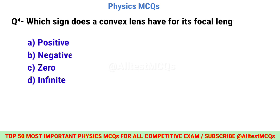Question number four: Which sign does a convex lens have for its focal length? Correct option is A: Positive.